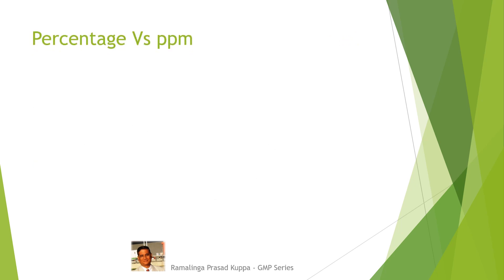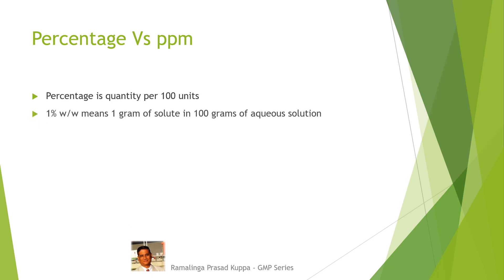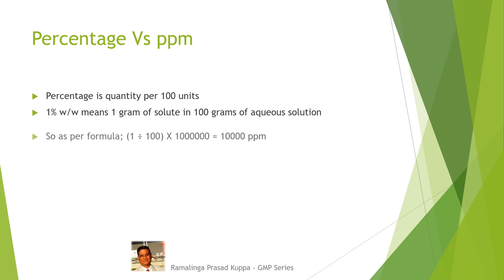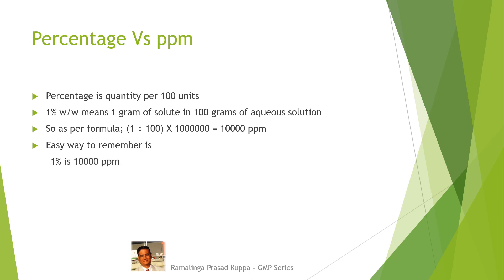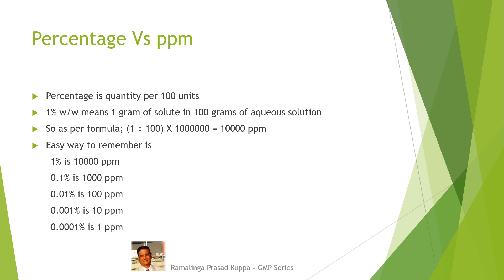Let us understand percentage versus PPM. Percentage is quantity per 100 units. 1 percent weight by weight means 1 gram of solute in 100 grams of aqueous solution. As per the formula, 1 gram divided by 100 grams multiplied by 10 to the power of 6 will be equal to 10,000 PPM. Easy way to remember: 1 percent is 10,000 PPM; 0.1 percent is 1,000 PPM; 0.01 percent is 100 PPM; 0.001 percent is 10 PPM; and 0.0001 percent is 1 PPM.